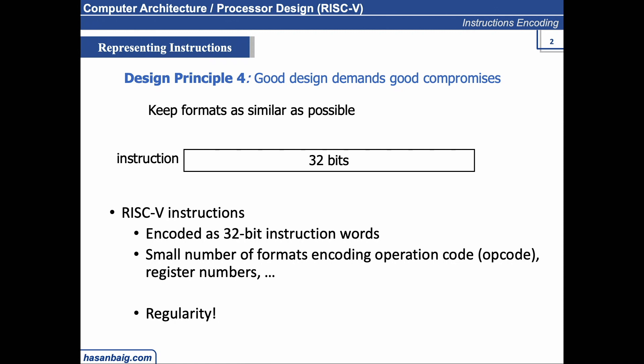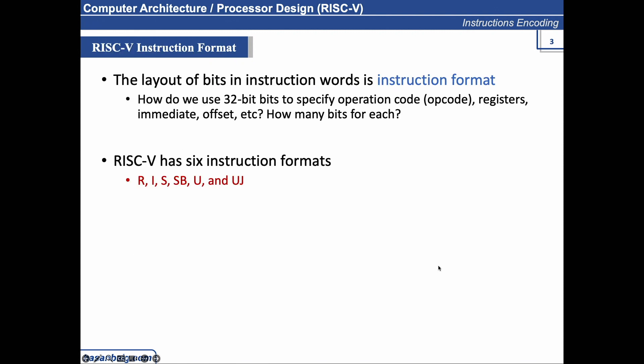RISC-V has six instruction formats: R, I, S, SB, U, and UJ. We will be mostly using R, I, S, and SB, but we will see what U and UJ are.